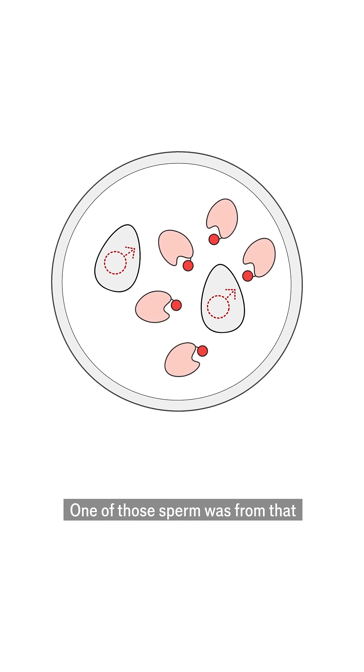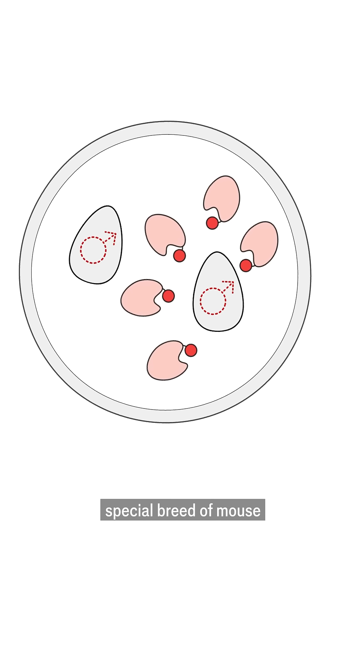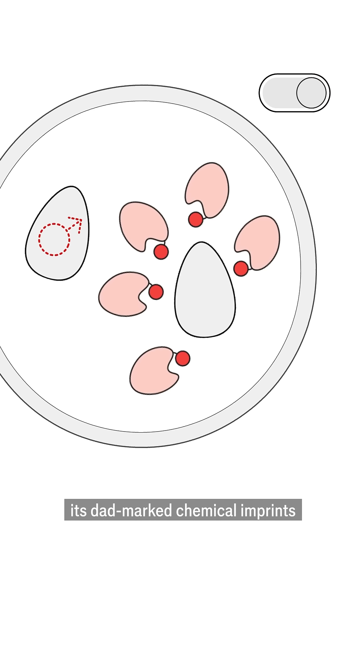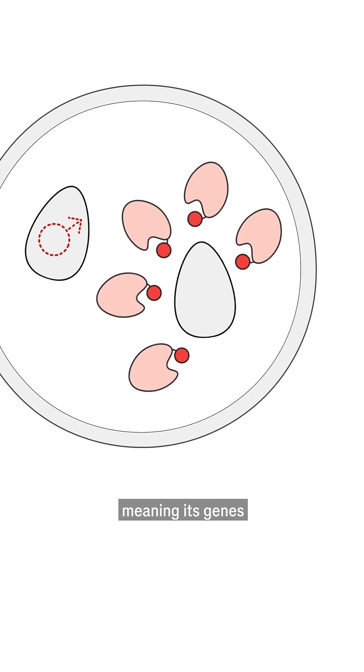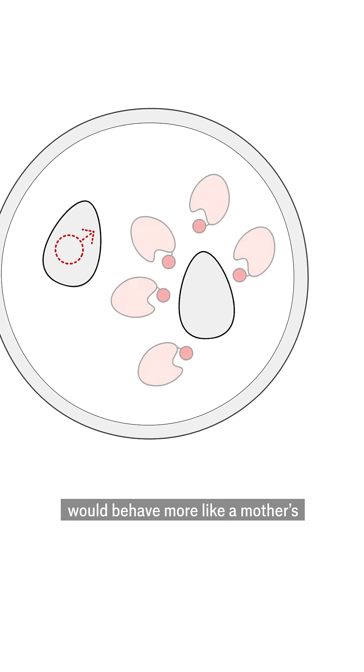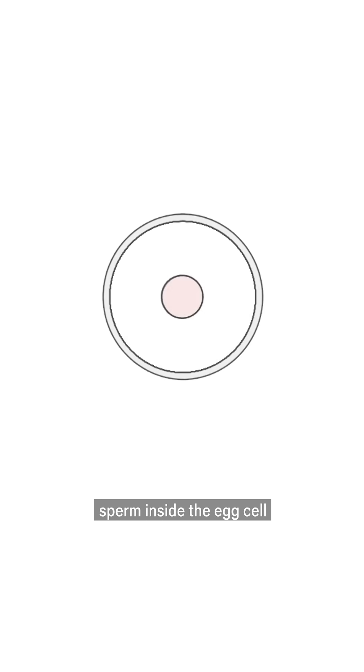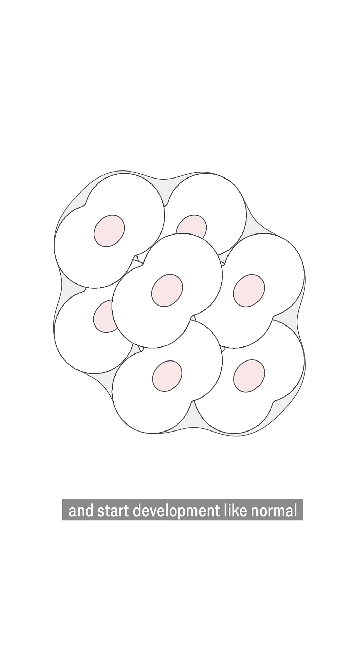One of those sperm was from that special breed of mouse that the editors could target, so they were able to switch off its dad-marked chemical imprints, meaning its genes would behave more like a mother's. The other normal sperm could then combine with the changed sperm inside the egg cell and start development like normal.